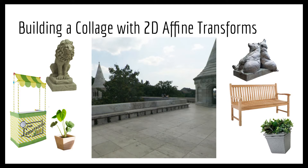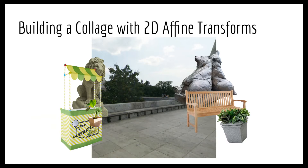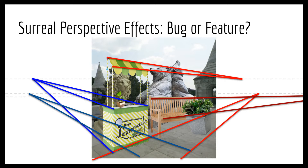Assembling these images together using only affine transforms produces conflicting perspective cues. Each image has its own local perspective cues, but in general, there is no guarantee that these perspective cues will agree with one another globally, as illustrated here.